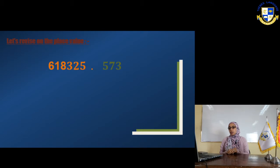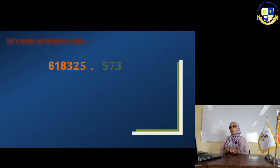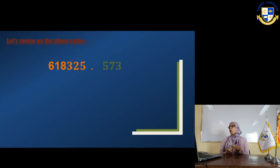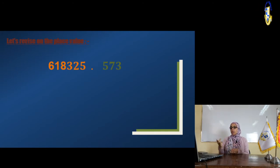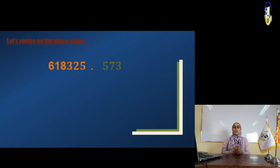Approximate to the nearest tenth means the first digit to the right of the point. It can be written as 'tenth', 'one decimal place', '0.1', or 'one over ten'. All four forms mean approximate to the nearest tenth.